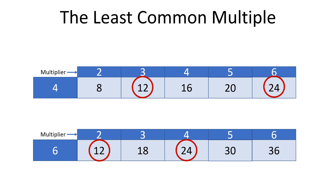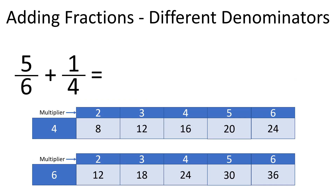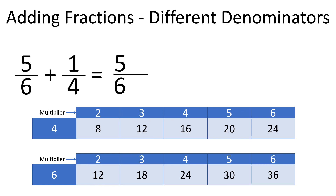What does it mean to find the least common multiple? It means we have to use the smallest number that is a common multiple as the common denominator. 12 is smaller than 24, so 12 is the least common multiple for 4 and 6, and we will use it as the common denominator. To add 5 sixths and 1 fourth, we will represent those fractions as equivalent fractions with a denominator of 12. To do that, we multiply 6 in the denominator of the first fraction by 2, since 6 times 2 is 12. Since we multiply the denominator by 2, we also multiply the numerator by 2, so we multiply 5 by 2.